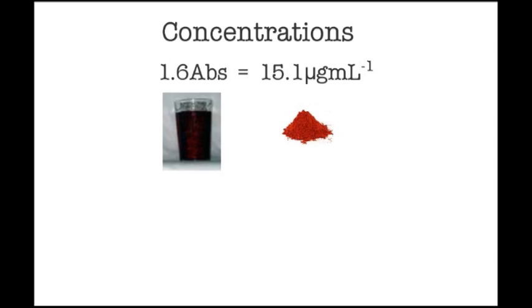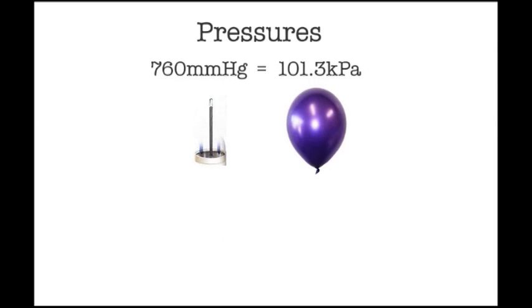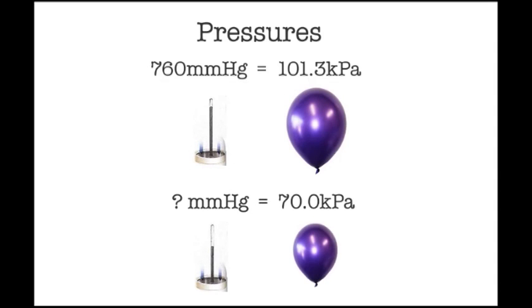Also, if an absorbance reading of 1.6 indicates a solute concentration of 15.1 micrograms per mil, then an absorbance of 0.96 will be proportionally less. And finally, given that 760 millimeters of mercury is equivalent to 101.3 kilopascals, a pressure of 70 kilopascals will be proportionally less.